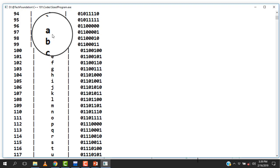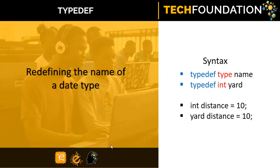So characters are treated as ASCII values and are internally represented by numbers. C++ also allows you to assign new names to existing data types using the typedef declaration. For instance, if you want to rename int to yard, the way you do this is to begin with the typedef keyword, followed by the type you want to change, and the new name you want to assign. So typedef int yard — and instead of int distance = 10, you can now do yard distance = 10.